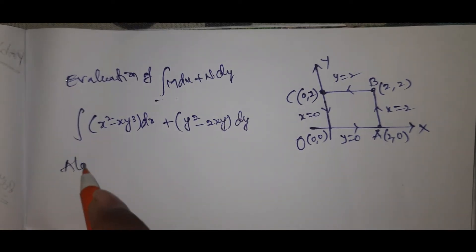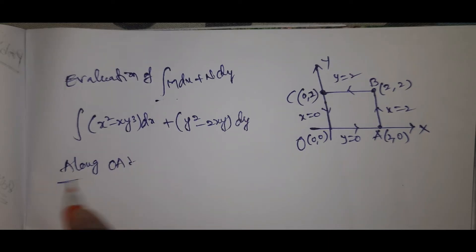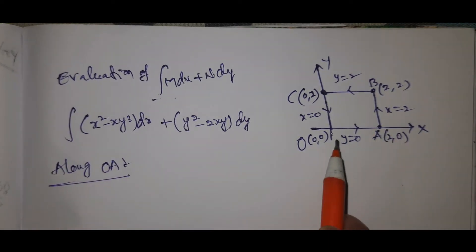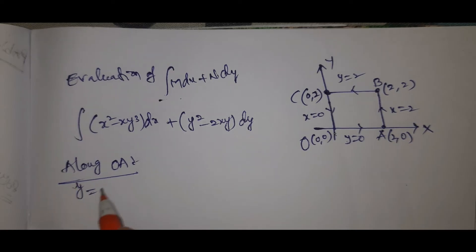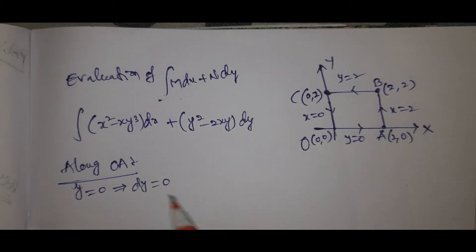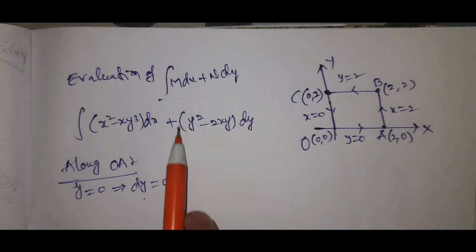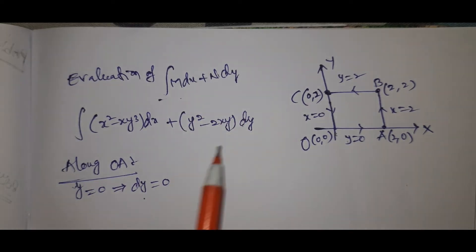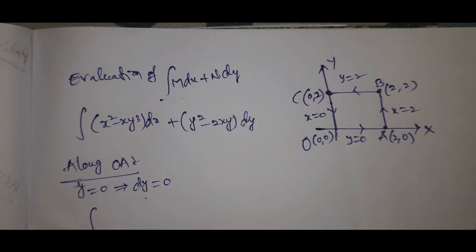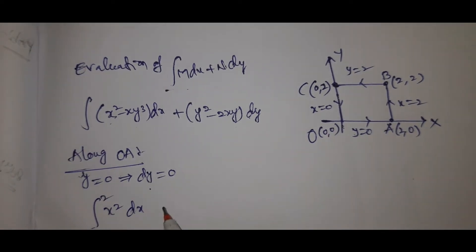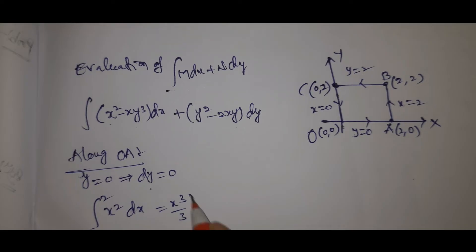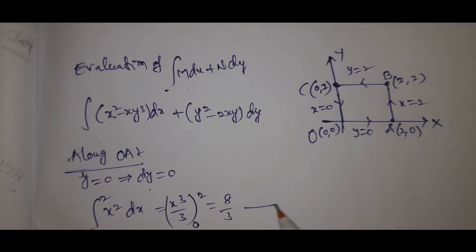Now for the LHS, we compute along OA. Along OA, y equals 0, which implies dy equals 0. Substituting y equals 0, the integral reduces to the integral of x squared dx from 0 to 2. This equals x cubed over 3 evaluated from 0 to 2, which equals 8 over 3. This is equation number 2.